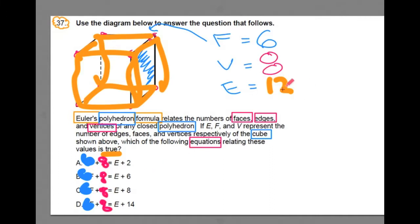...and everywhere you see edges, E for edges, substitute in twelve. Twelve, twelve, twelve, twelve. Now I want you to evaluate these equations and find out which one's true. Another way of thinking about which one's true is, which one works?